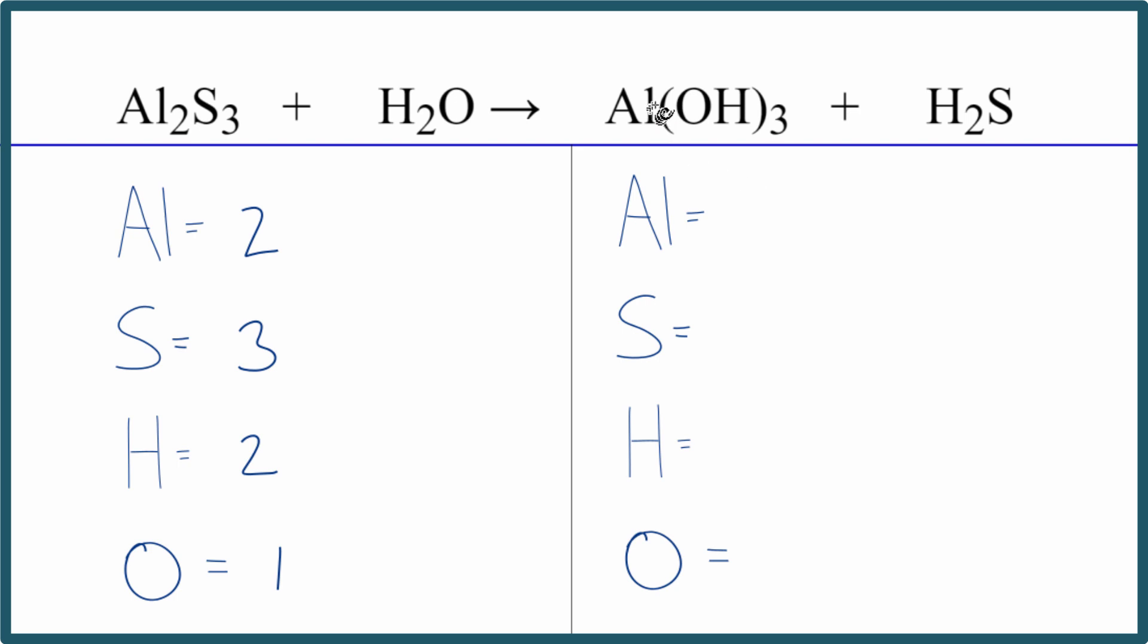On the product side, we have one aluminum, then we have one sulfur, and for hydrogens, we have three times the one here, plus these two here. So we have a total of five hydrogen atoms, and oxygen, this three applies to everything in the parentheses, so three times the one, that gives us three oxygen atoms.